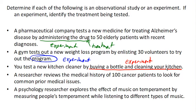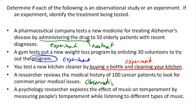Now suppose that a researcher reviews the medical history of 100 cancer patients to look for prior medical issues. In this case, the researcher isn't doing anything to these people — they're simply looking at their previous medical records. And so this is observational; this is not an experiment because they're not subjecting the patients to any treatment.